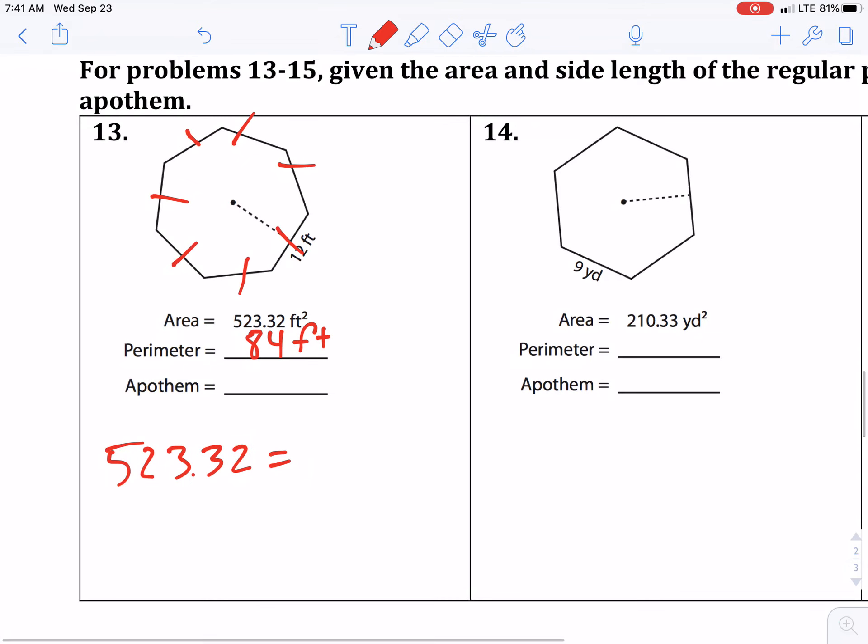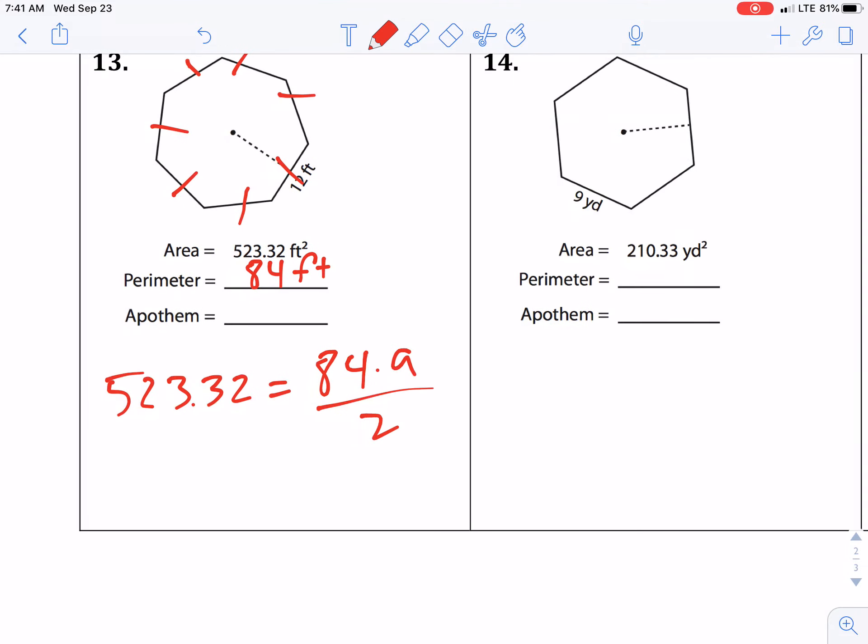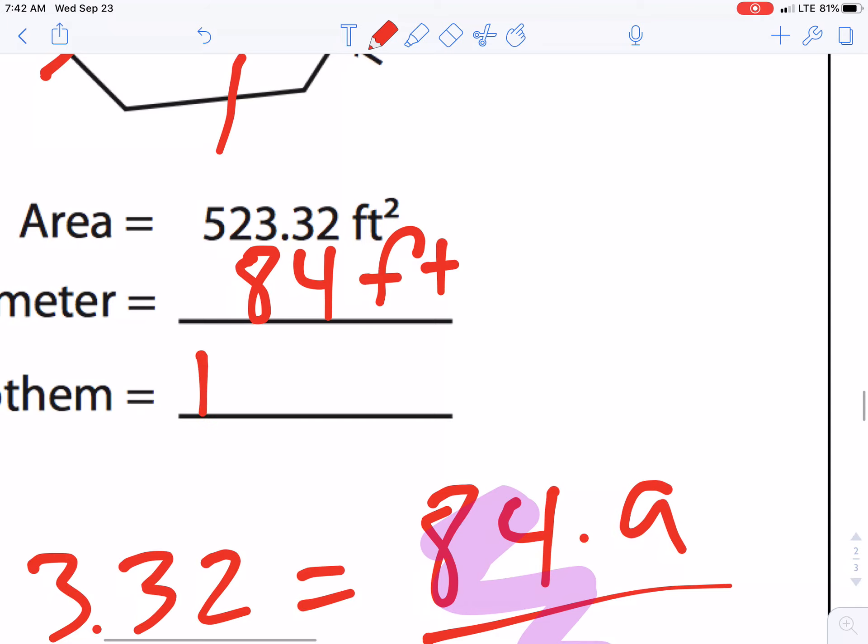We would do 84 times a over two. 84 divided by two is 42, so 523.32 is equal to 42a. All right, again, I just simplify that down, and then now divide 523.32 by 42 gives you a is equal to 12.46 and then that would be feet.